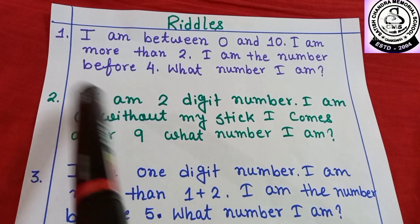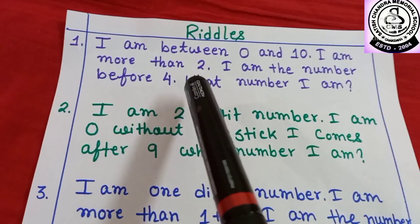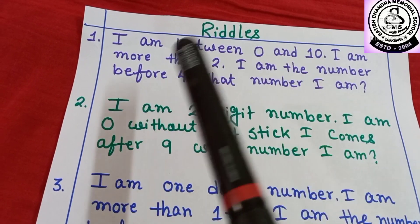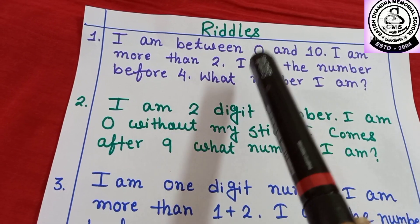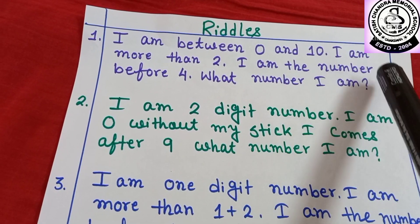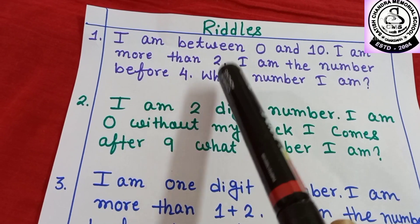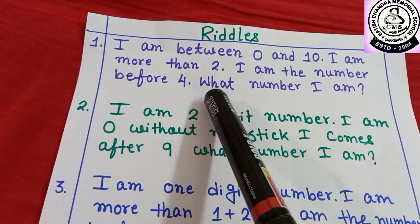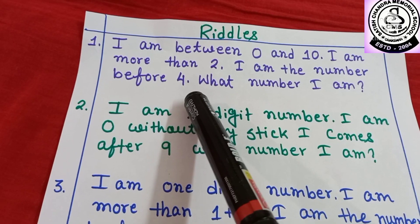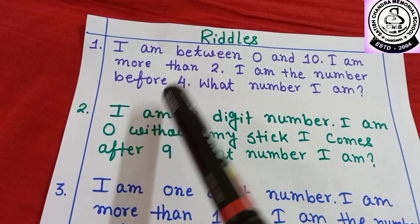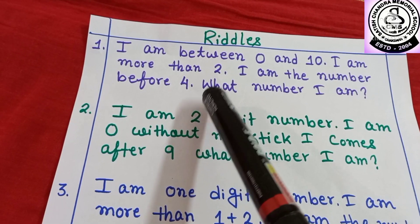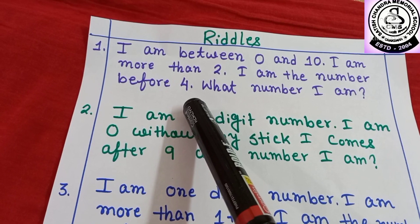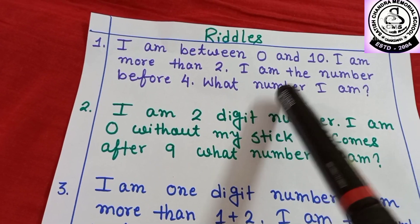Number 1. I am between 0 and 10. I am more than 2. You have to remember one thing: more than means after number. I am the number before 4. So, what number am I?